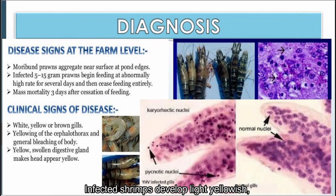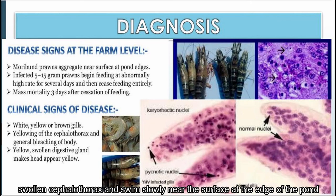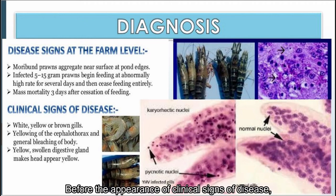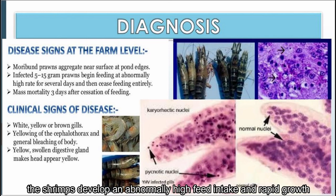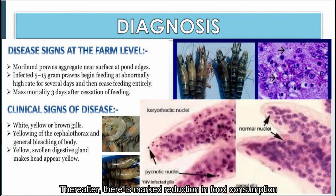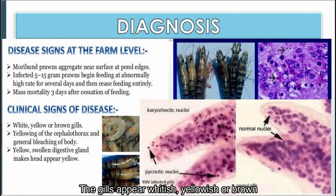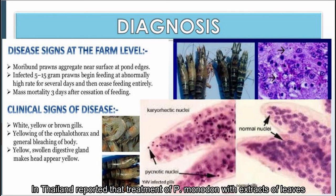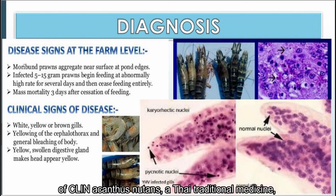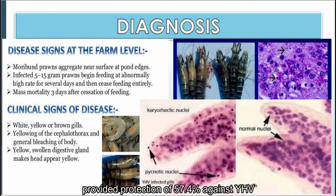Infected shrimp develop a light yellowish swollen cephalothorax and swim slowly near the surface at the edge of the pond. Before the appearance of clinical signs, shrimp develop an abnormally high feed intake and rapid growth. Thereafter, there is a marked reduction in food consumption prior to cessation of feeding and the onset of rapidly accelerating mortality. The gills appear whitish, yellowish, or brown. In Thailand, treatment of Penaeus monodon with extracts of leaves of Clinacanthus nutans (a traditional medicine) provided protection of 57.4% against yellowhead virus in shrimp fed with 1 gram per kilogram pellets.